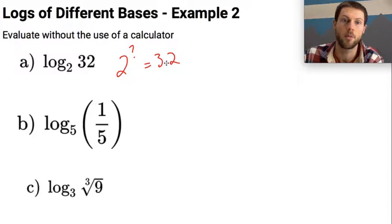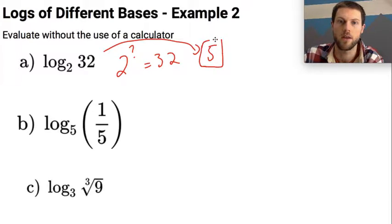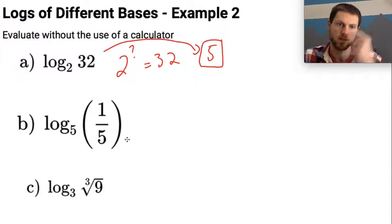And I do know my powers of 2 pretty well, so I know that this is going to actually equal 5, since 2 to the fifth power equals 32. So let's do the same thing with this next one.